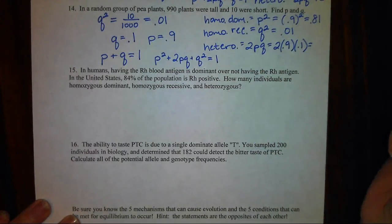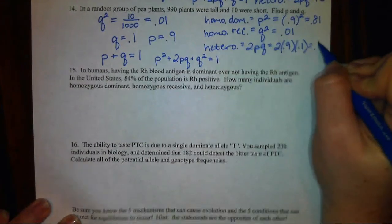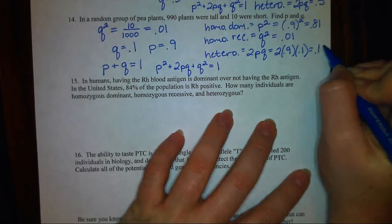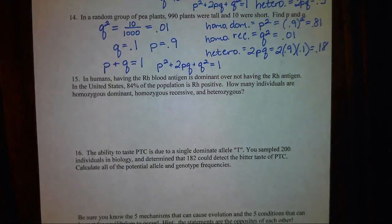So 2 times P times Q is going to equal my last category. My last category is 0.18. In other words, 18% of my population is heterozygous.